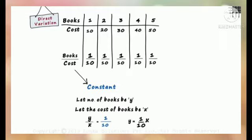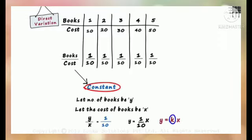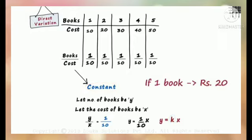This is another way in which direct variation is studied: y = kx, where k is a constant. Remember, this constant can have any numerical value. In this example, if one book had cost 20 rupees, then the constant would have been 1/20.